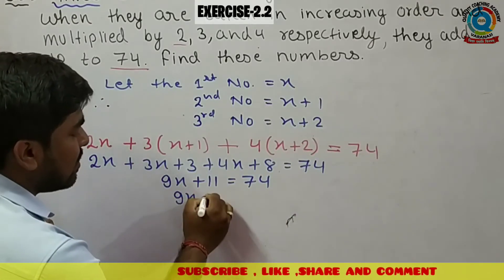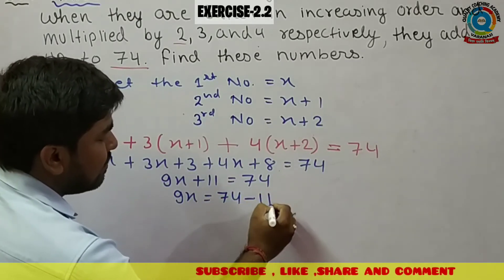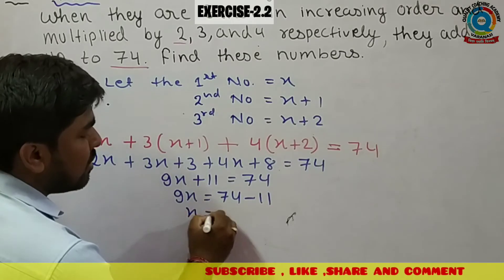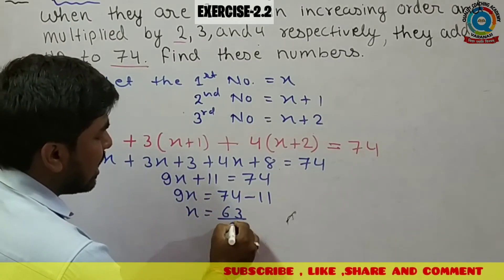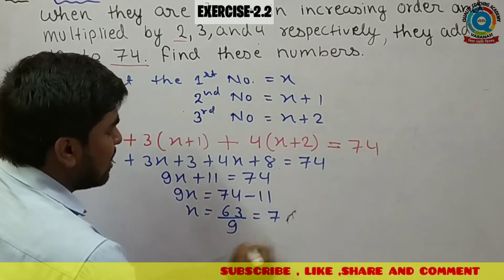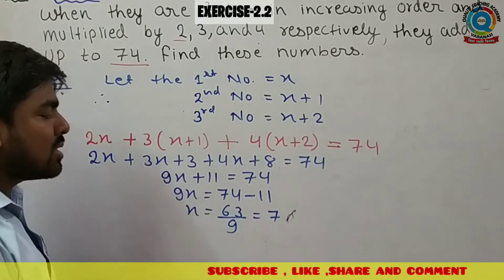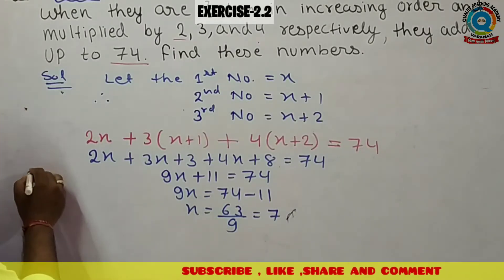Therefore, 9x equals 74 minus 11. X is equals to 63. 9 into 7 is 63. X berabar kya gaya? 7 a gya. X berabar 7 a gya hai.